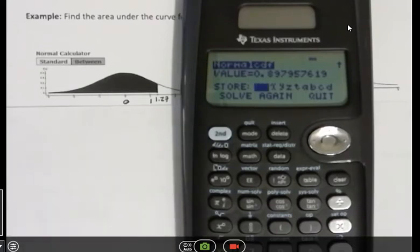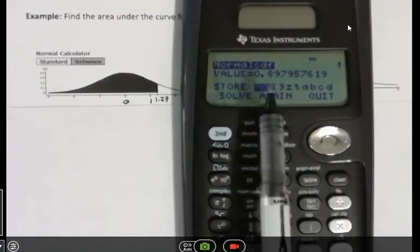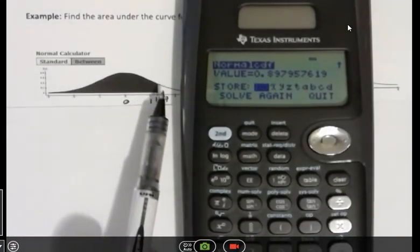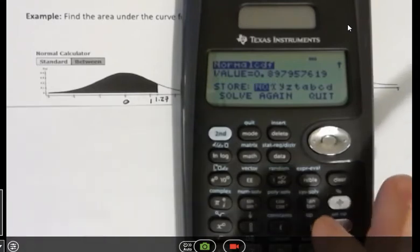Always when you get an answer using your normal CDF function, your value is going to be between 0 and 1 because the area under the curve is equal to 1 altogether, right? So your value is going to be some piece of that.